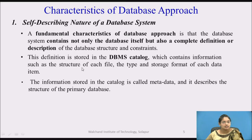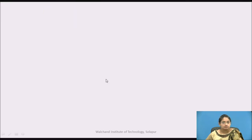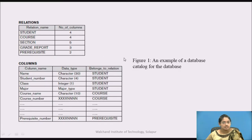The DBMS catalog contains all the structure of files, type of files, storage formats, and all the different constraints. This is a view — an example of the database catalog. You can see there are two tables: first is the relation and second is the columns, showing relation name and number of columns. There is a student table with four columns, a course table with four columns, a section table with five columns, a grade report table with three columns, and a prerequisite table with two columns. This is all the metadata — whatever data is stored in these tables is described here.